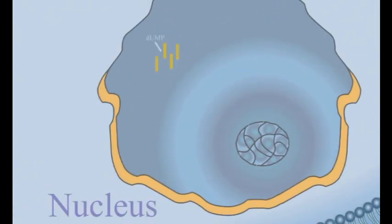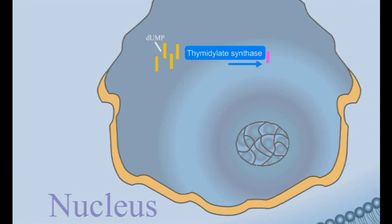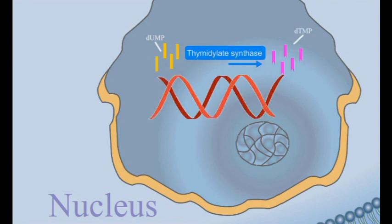In the fungal nucleus, deoxyuracil monophosphate (DUMP) is converted by the thymidylate synthase enzyme into deoxythymidine monophosphate (DTMP). DTMP is a significant agent in fungal DNA strand synthesis.